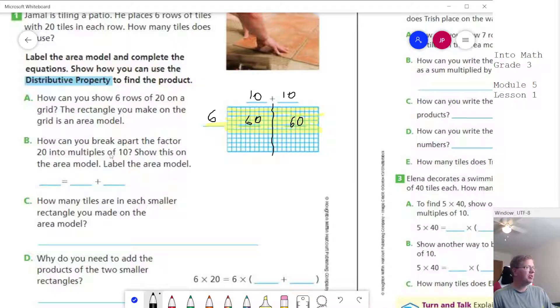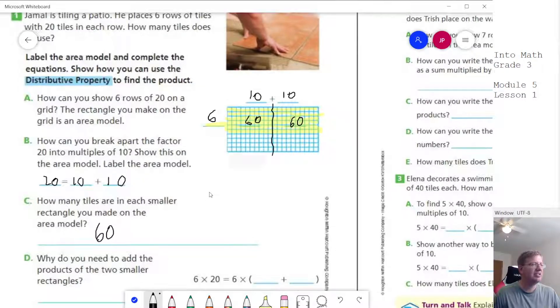So how can you break apart the factor into multiples of 10? We would get to show, so 20 equals 10 plus 10. And then how many tiles are in each smaller rectangle? We would get 60. Why do you need to add those together? Well if we don't add them together we're not going to end up getting the correct answer at the end.